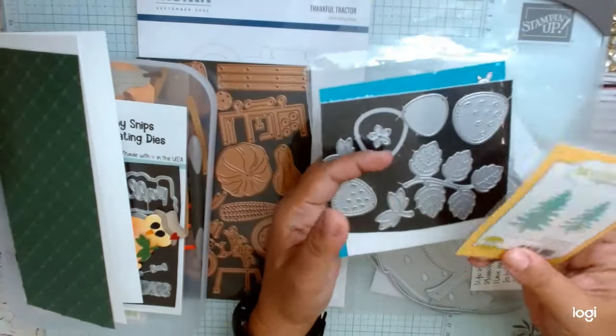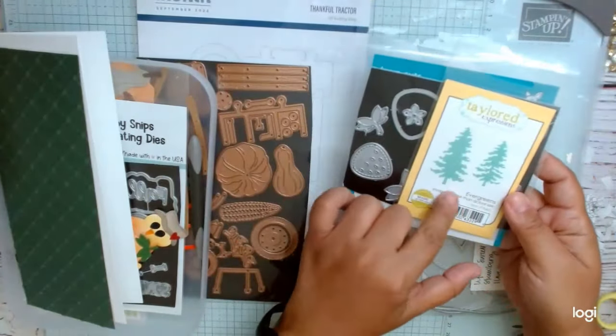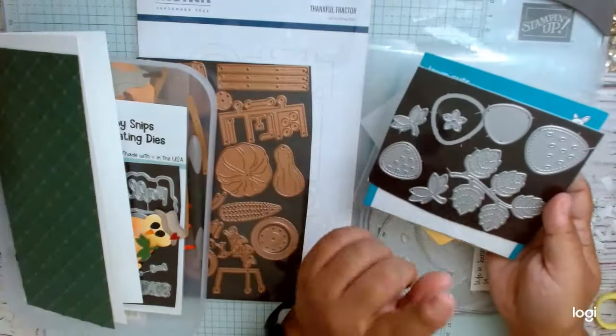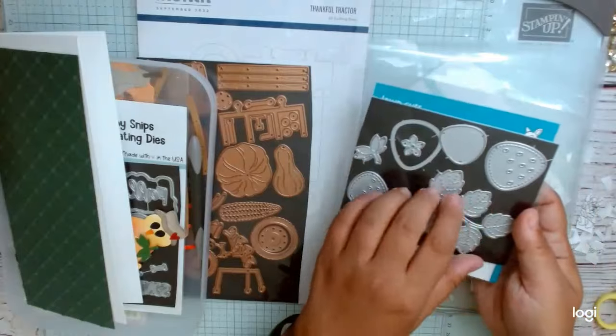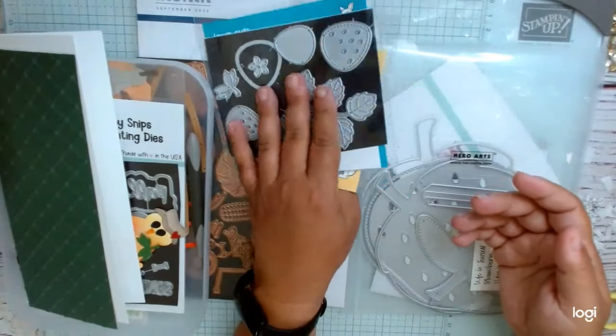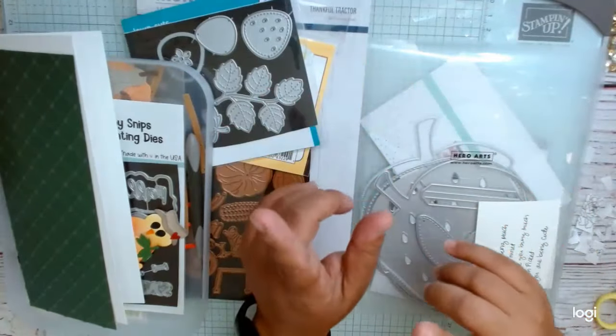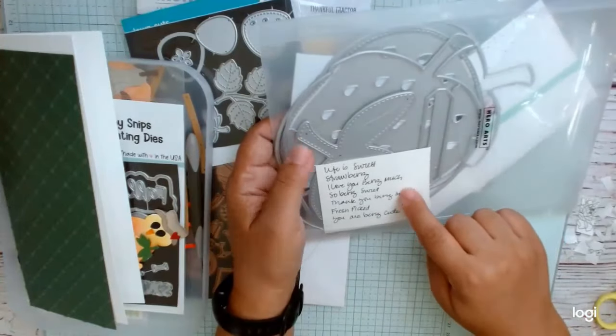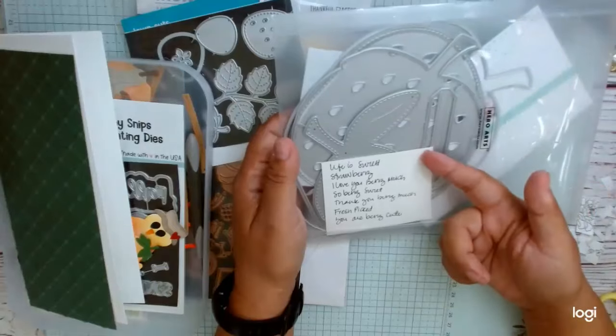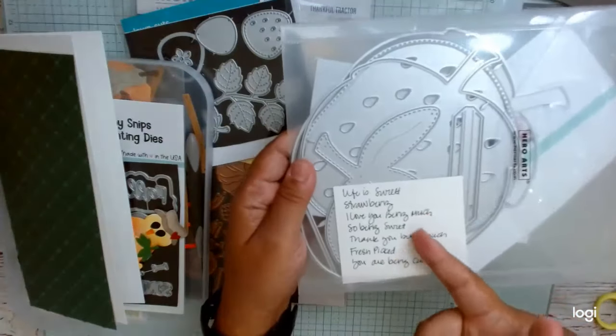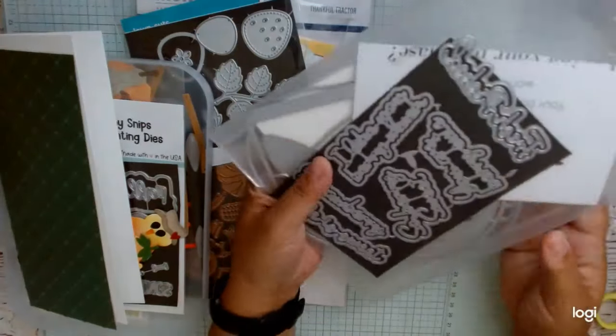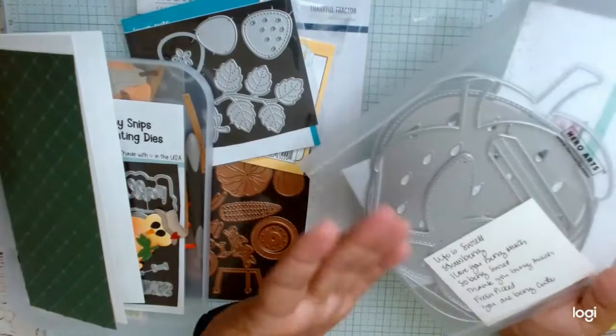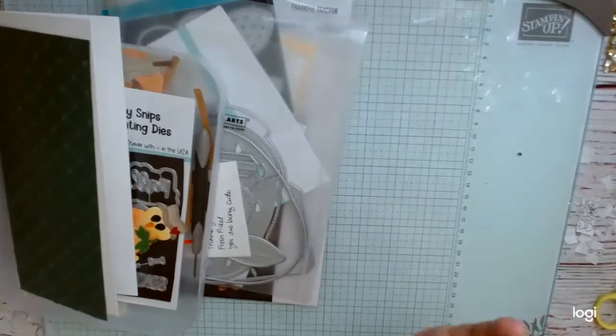So in my extra cards, not the one I'm going to be making on screen, but the ones I'll be showing at the end, I use these trees and these strawberries. Tailored Expressions made trees and then Lawn Fawn with the strawberries. And then for the card I'm making today, and I also use it for one of the other cards, I use these sentiments from Scrapbook Diva. And I was smart enough to actually write down the names of the segments. I can't believe I did that because I never do that.